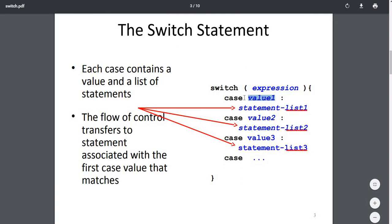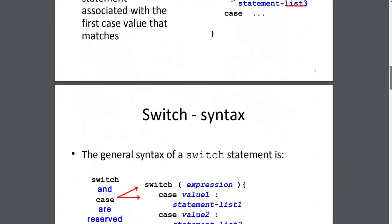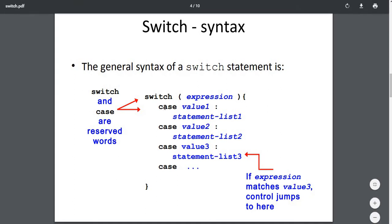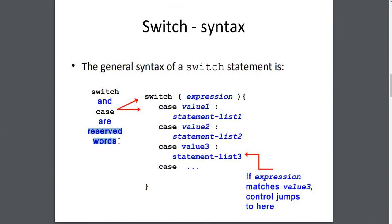Each case contains a value and a list of statements to be executed after it. The flow of control transfers to the statement associated with the first case value that matches. Switch and case are reserved words — they are keywords with their own specific meaning and start with a small letter. For example, if the expression matches value 3, then control jumps to that particular statement associated with case value 3.